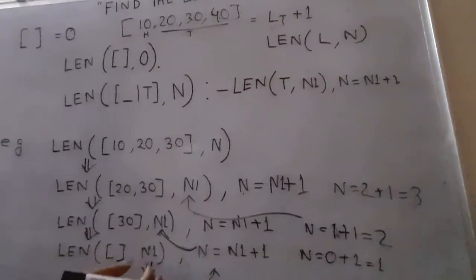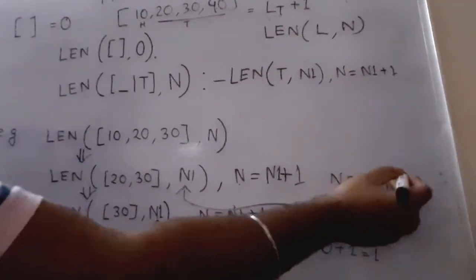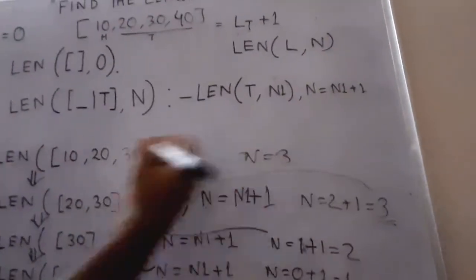So in this way, we'll get the output N = 3. This value will come here, so N = 3.